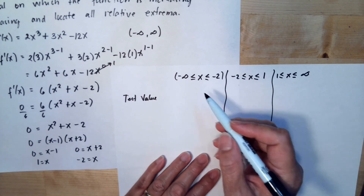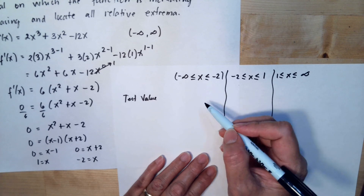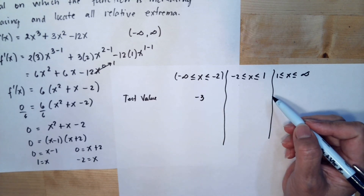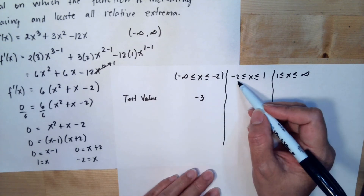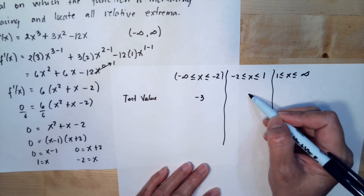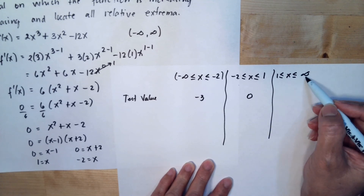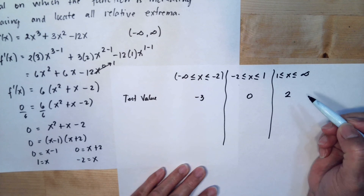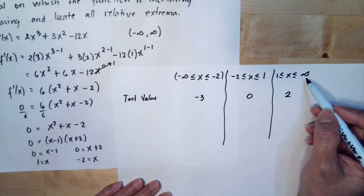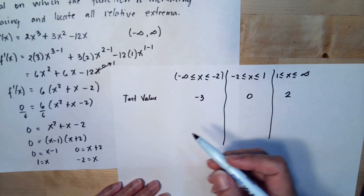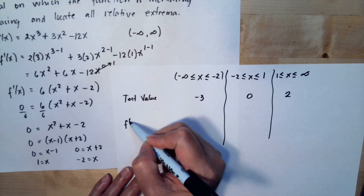We choose test values in each interval. Between negative infinity and negative 2, we choose negative 3. Between negative 2 and 1, we choose 0. Between 1 and positive infinity, we choose 2. Then we substitute each test value into our derivative.